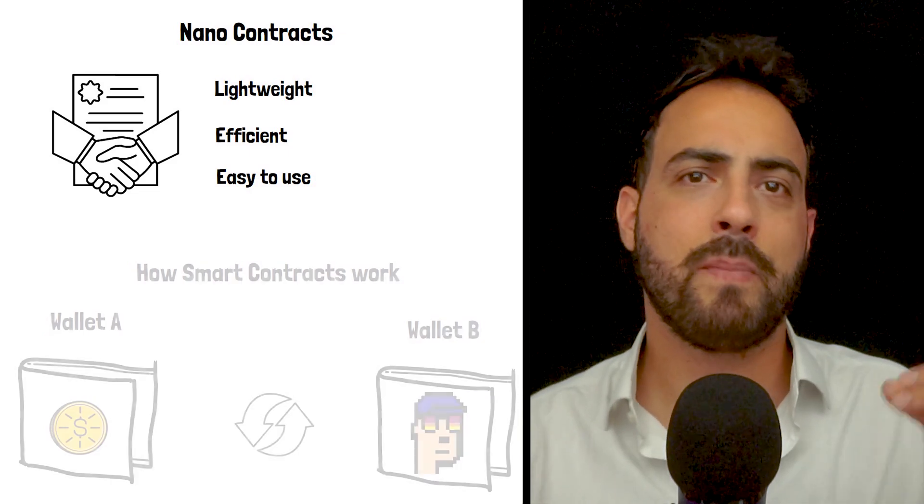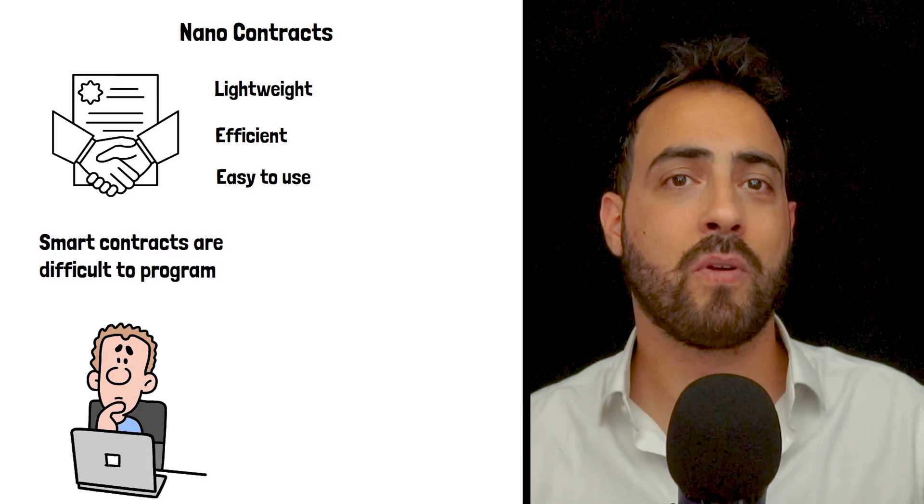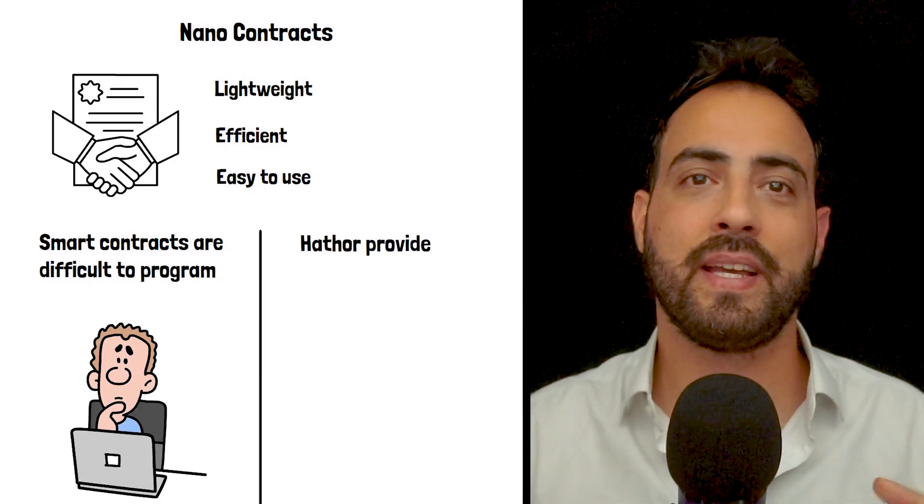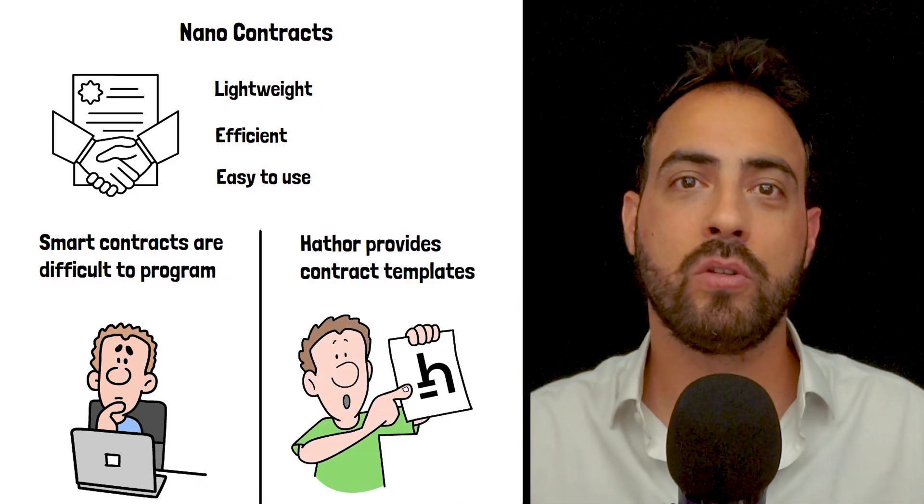Generally speaking, smart contracts are very difficult to program. Hathor, on the other hand, provides contract templates, making it very easy to create nano-contracts on the Hathor blockchain without needing to develop their code.